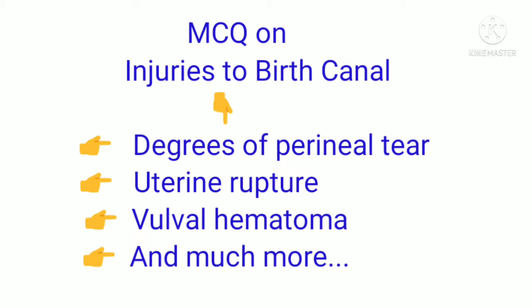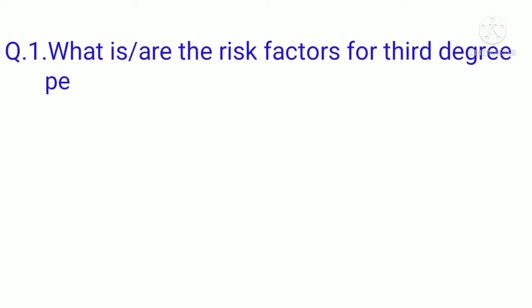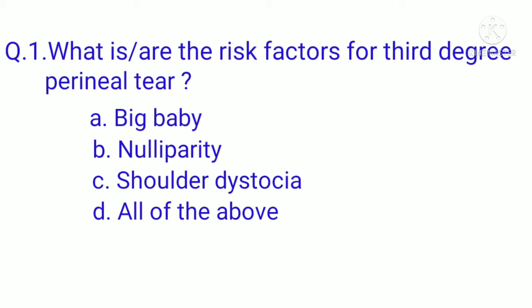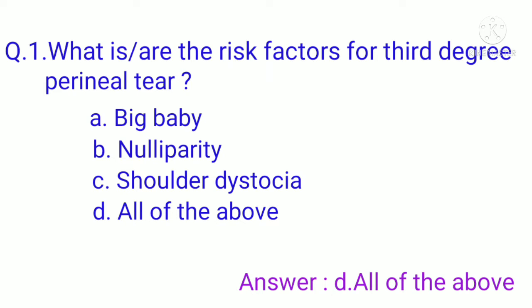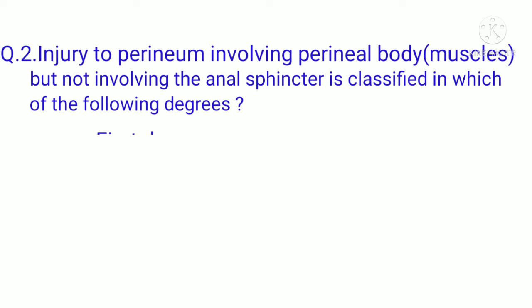Question 1: What are the risk factors for third degree perineal tear? Option A: big baby (weight more than or equal to 3 kg). Option B: nulliparity. Option C: shoulder dystocia. Option D: all of the above. The correct option is D, all of the above.